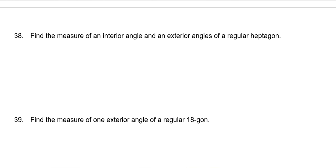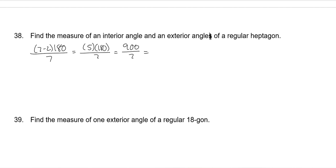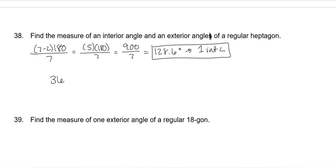Find the measure of one interior angle and one exterior angle of a regular heptagon (7 sides). For one interior angle: (7 minus 2) times 180 divided by 7 is 5 times 180 divided by 7, which is 900 divided by 7, approximately 128.6 degrees. For one exterior angle: 360 divided by 7 is approximately 51.4 degrees.